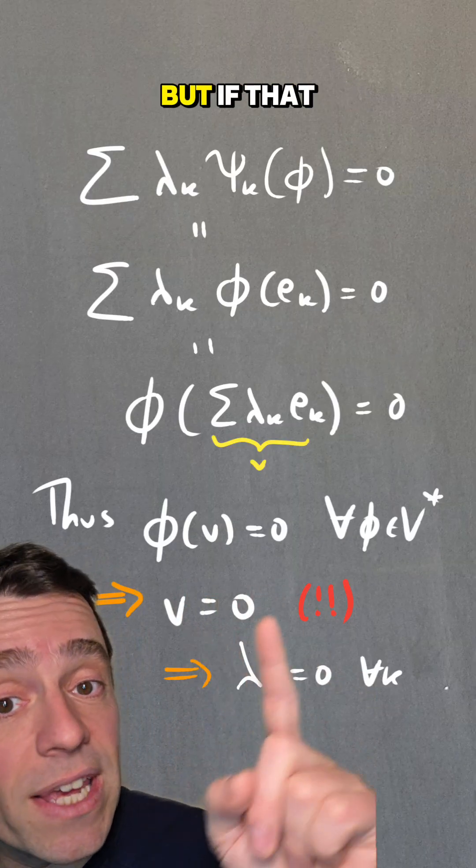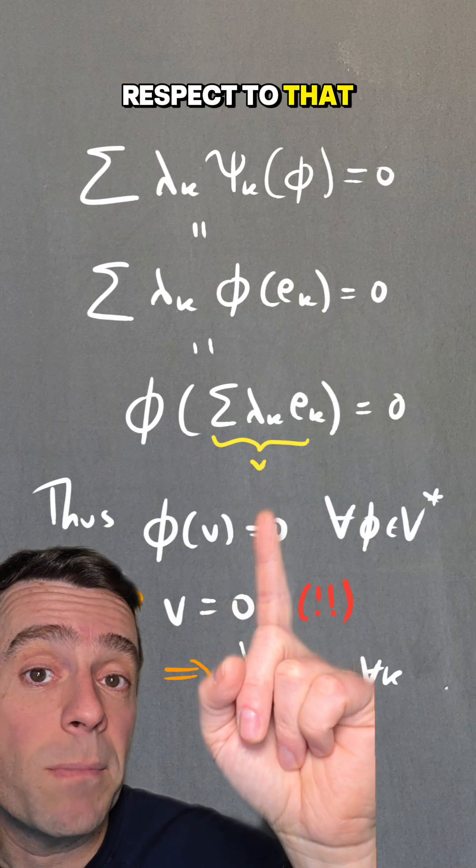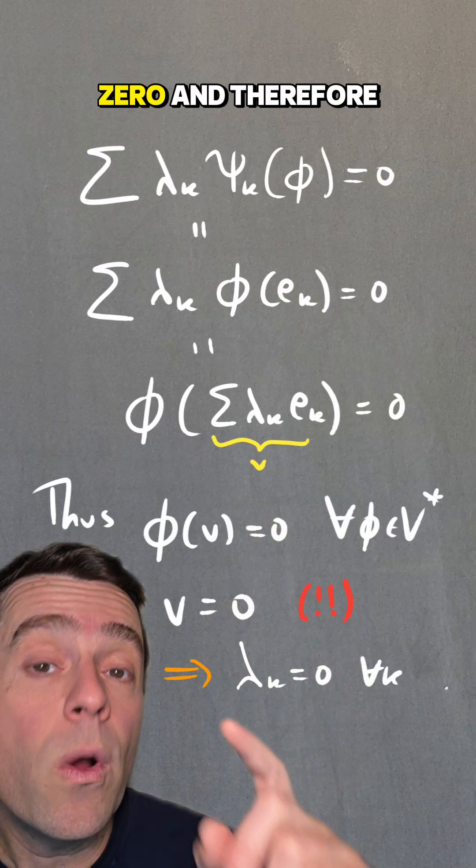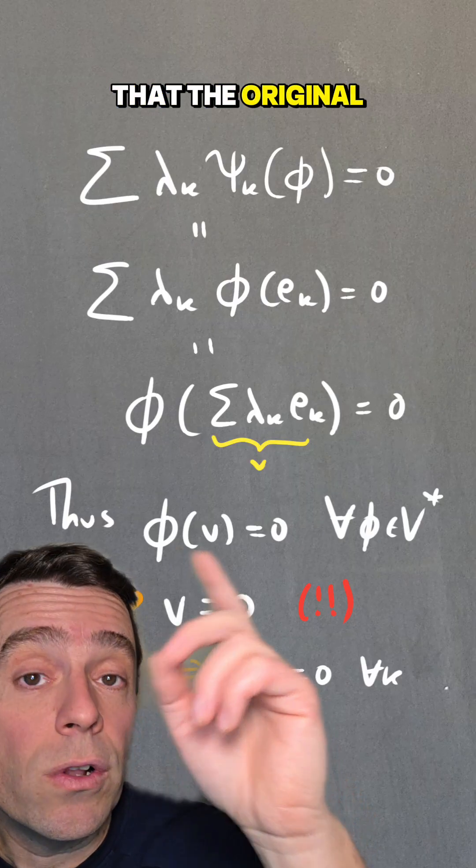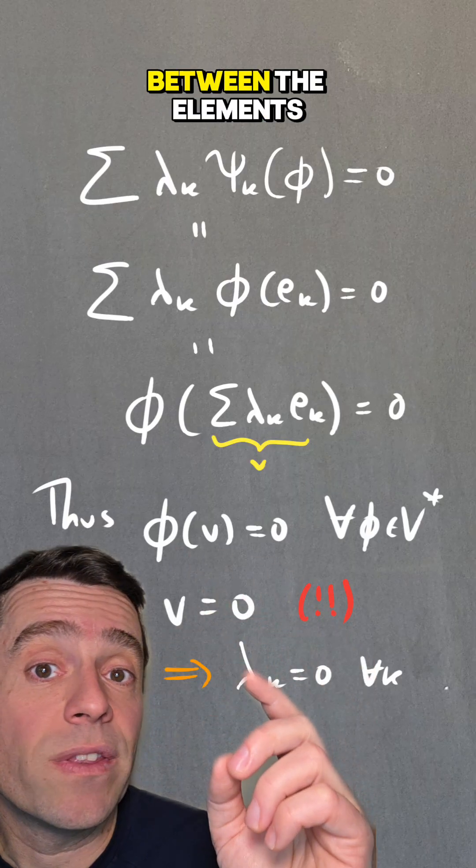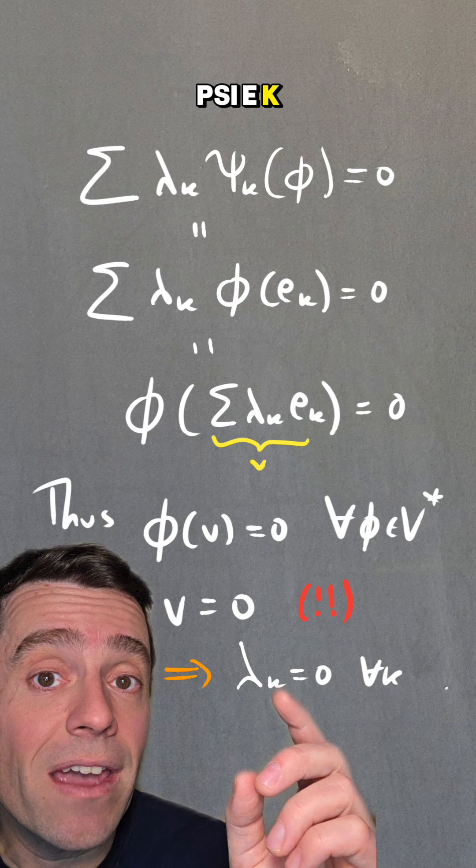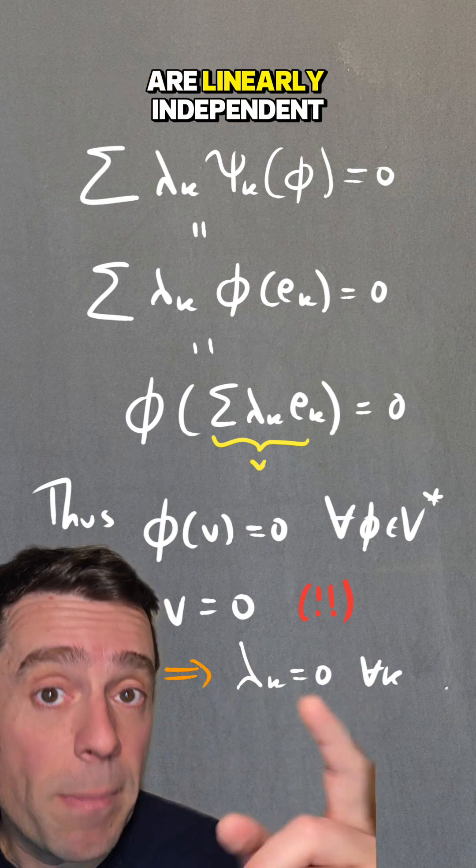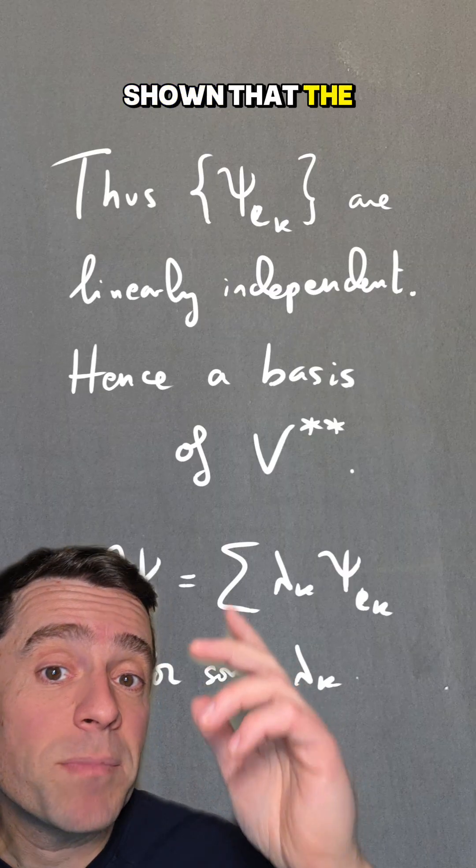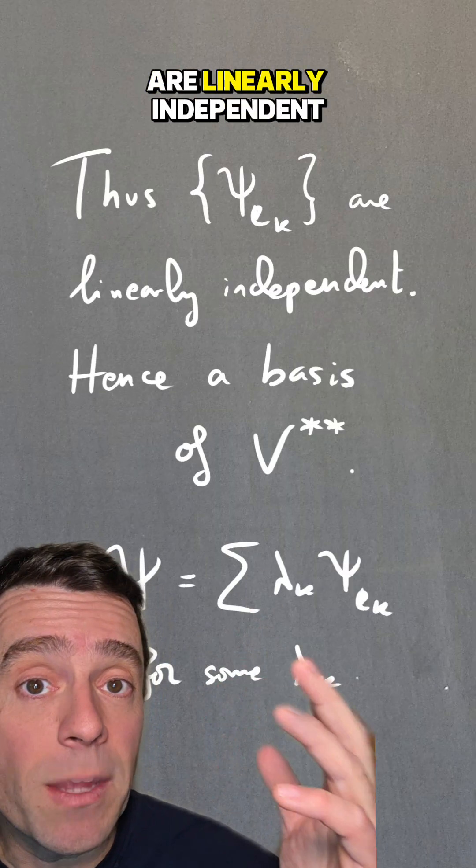And if that vector is the zero vector, the coordinates with respect to that basis must be all zero, and therefore we have reached the conclusion that the original linear dependence between the elements ψ_e_k was actually just a trivial one. So therefore, those are linearly independent.